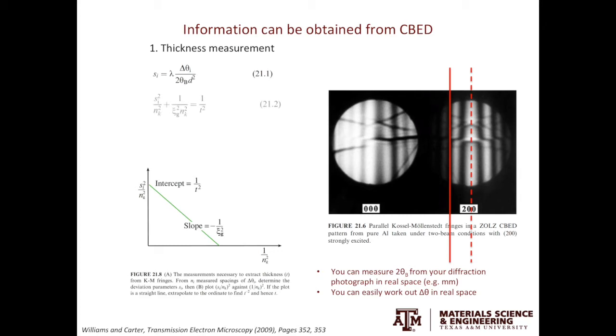Then we can write down another equation. We have SI square over Nk square plus 1 over KSI G square Nk square equals to 1 over T square. SI has been defined by the equation above. Nk are the numbers of your choice. We will come back to that soon. KSI G is the extinction distance of the specific G vector. T is the specimen thickness. This equation looks quite complicated. However, if we treat SI square over Nk square as Y and 1 over Nk square as X, they will form a linear relationship. The slope of the line is minus 1 over KSI G square, and the intercept on the Y axis is 1 over T square.